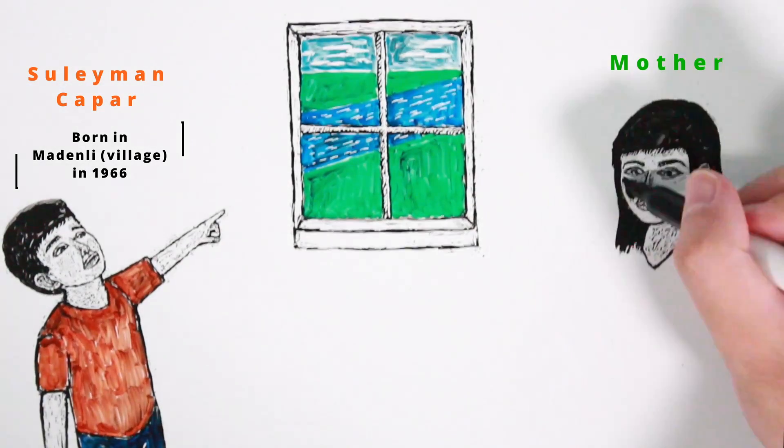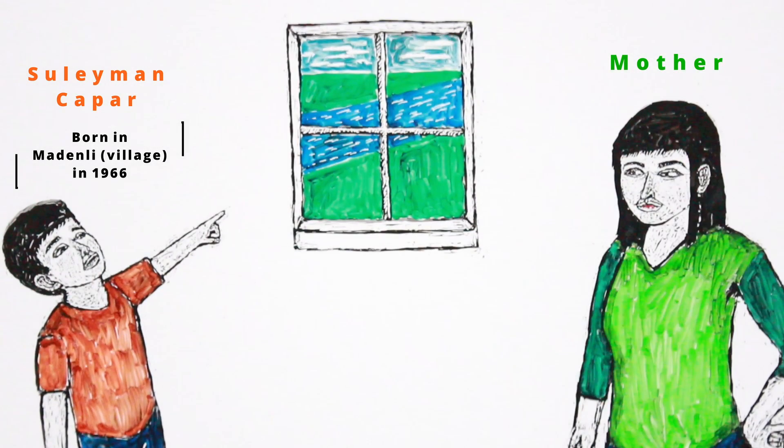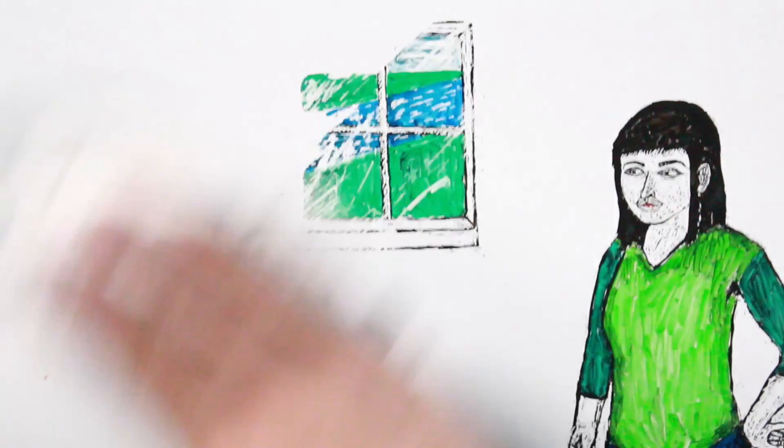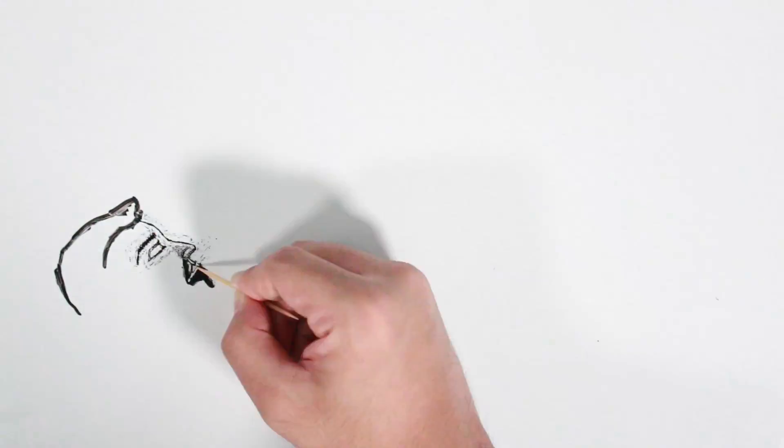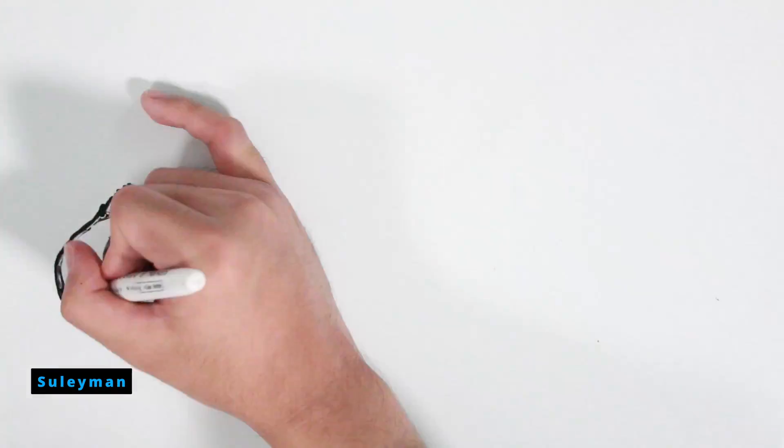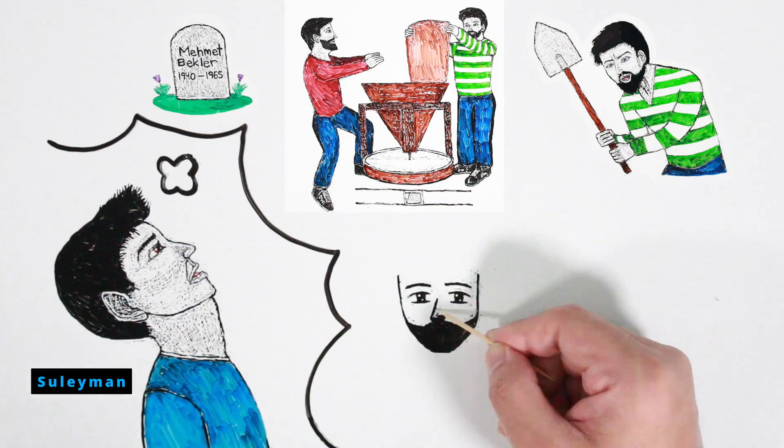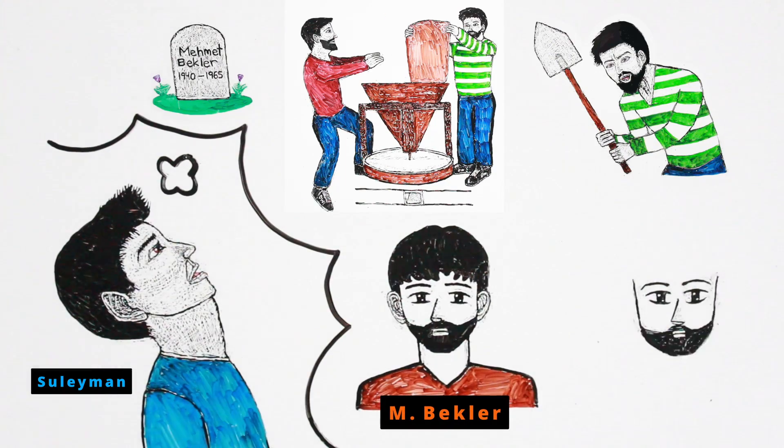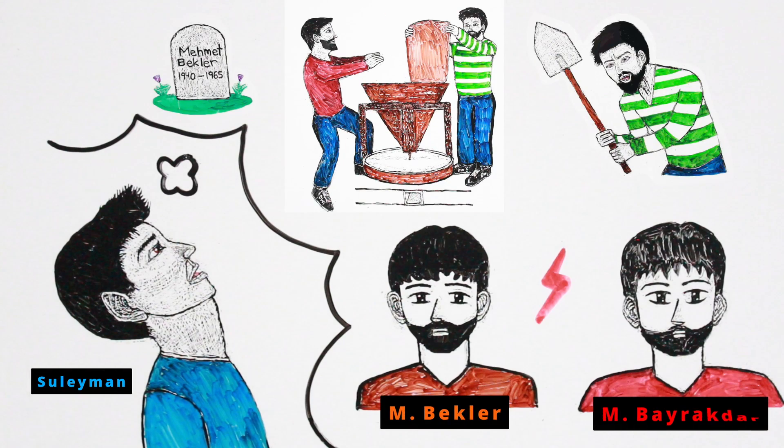When Suleyman began to speak, he pointed to a stream and said that he wanted to go to the stream. Later, Suleyman told his parents that he was a miller named Mehmet in his previous life. He said that he was killed by a customer who got in front of other waiting customers.